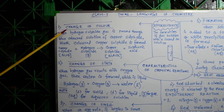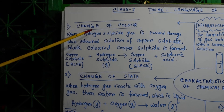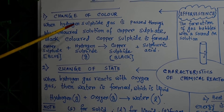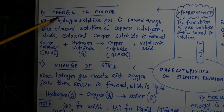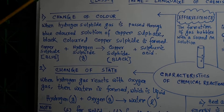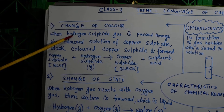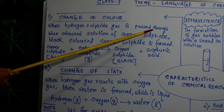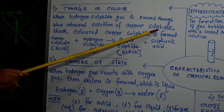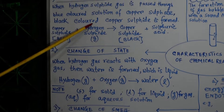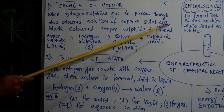First, the change of color. In some chemical reactions, the color of the reactants gets changed. For example, when hydrogen sulfide gas is passed through blue colored solutions of copper sulfate, black colored copper sulfide is formed.